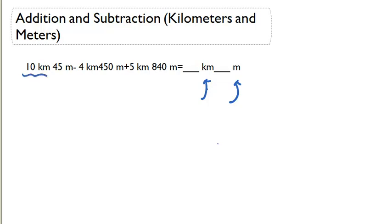We have 10 kilometers minus 4 kilometers plus 5 kilometers. So 10 minus 4 is 6, plus 5 is 11 kilometers. We're going to put an 11 in front of our kilometers. Let's do our meters.